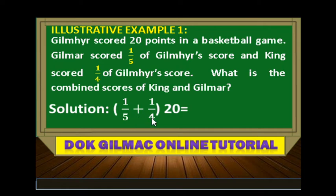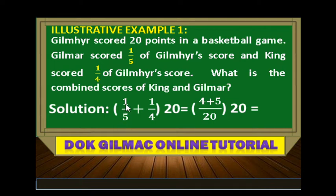Take note: we have one-fifth of 20 and one-fourth of 20. We get the LCD since the given fractions are dissimilar fractions, so we have 20 as the LCD. 20 divided by 5 is 4, times 1 is 4. 20 divided by 4 is 5, times 1 is 5. So we have 4 plus 5 all over 20, times 20, which is just equal to 9 points. The combined scores of King and Gilmar in the basketball game is 9 points.